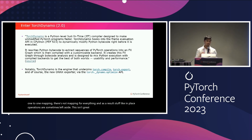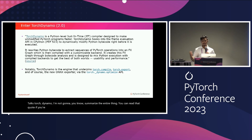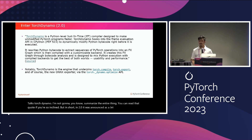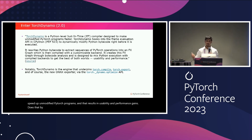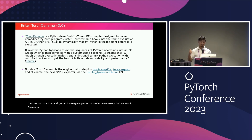We're at the PyTorch conference, so we're going to talk about Torch Dynamo. In short, in 2.0 it was announced as a JIT compiler designed to speed up unmodified PyTorch programs, resulting in usability and performance gains. It does that by rewriting Python bytecode and captures pieces of PyTorch operations in an FX graph, which we can use to get all those great performance improvements. It's also the engine that's the foundation for Torch compile, Torch export, and of course the new ONNX exporter.